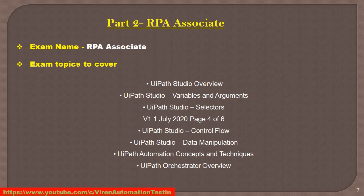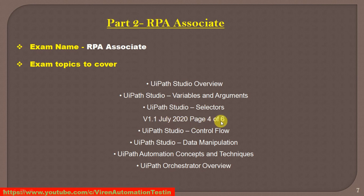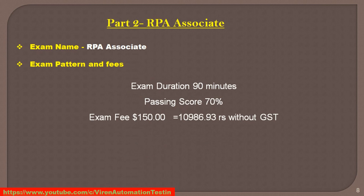The exam topics to cover for the RPA Associate online exam include the Studio overview — UiPath Studio which we use for automation design. Under UiPath Studio, there are topics such as variables, arguments, selectors, and more. You can refer to the UiPath documentation (version 1.1, July 2020) for the full list of preparation topics and where to start your UiPath Studio preparation.